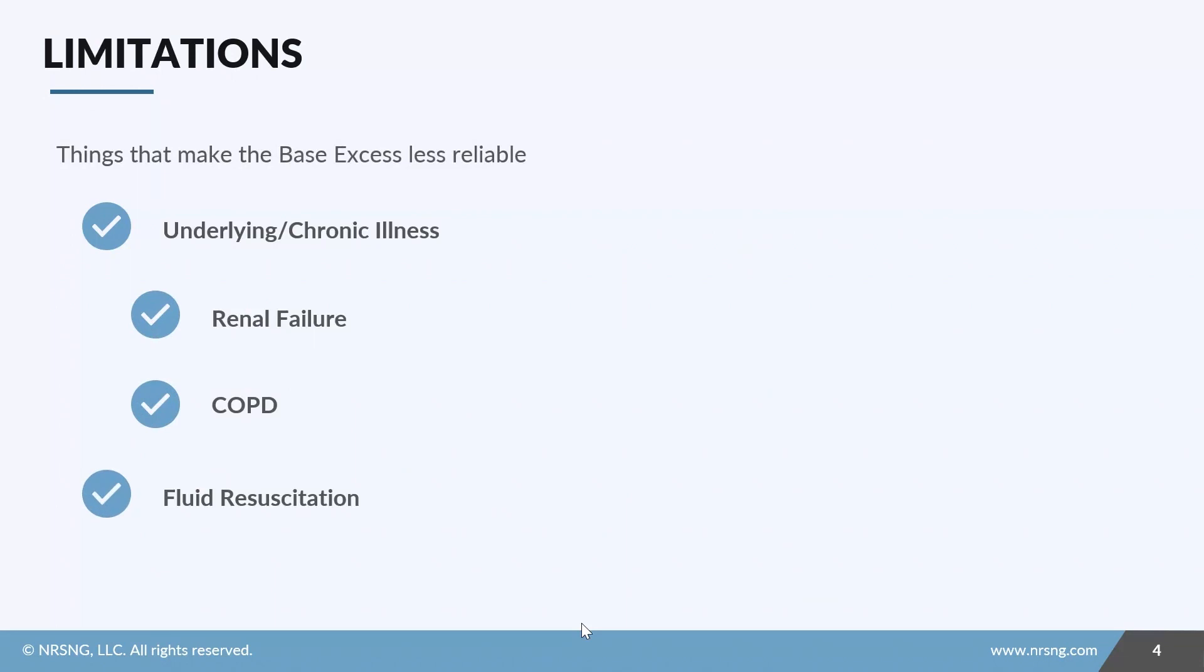While the base excess is a strong indicator for the metabolic component, it does have some limitations that make it less reliable. One limitation is in any patient with some sort of underlying or chronic illness that causes acid-base disturbances. For example, a client with renal failure who lives in a state of metabolic alkalosis.